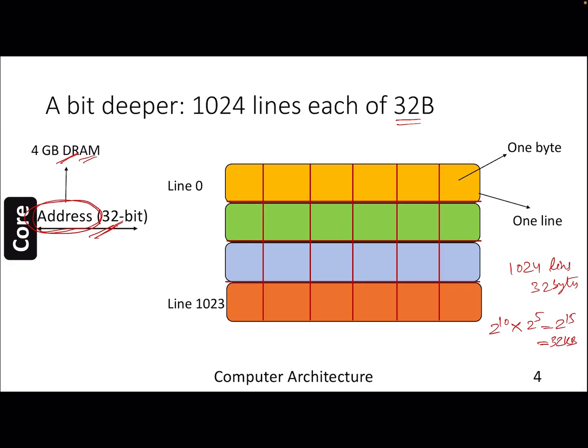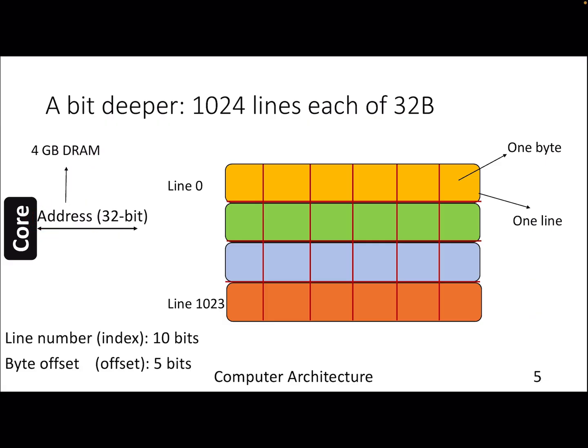Given an address, we need a mechanism to find out where exactly the data is. We have talked about bytes and lines which store multiple bytes. If a cache line is 32 bytes and you need to access one of them, you need a byte offset — also known as the block offset. You need 5 bits to identify which particular byte to access out of 32 bytes.